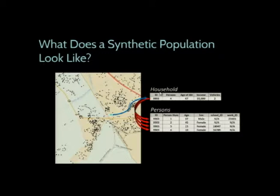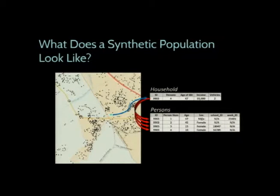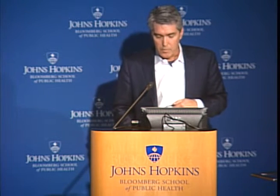What does the synthetic population look like? It's geospatial data. There's a location assigned to every household and information about each household — a record for every household in one table, and a record for every person in each household. That linkage between persons and households is very important. For infectious disease, it's about contact patterns: you're more likely to transmit within a household because of high contact there. Conceptually, there are dots on a map and tables linking the dots to characteristics.